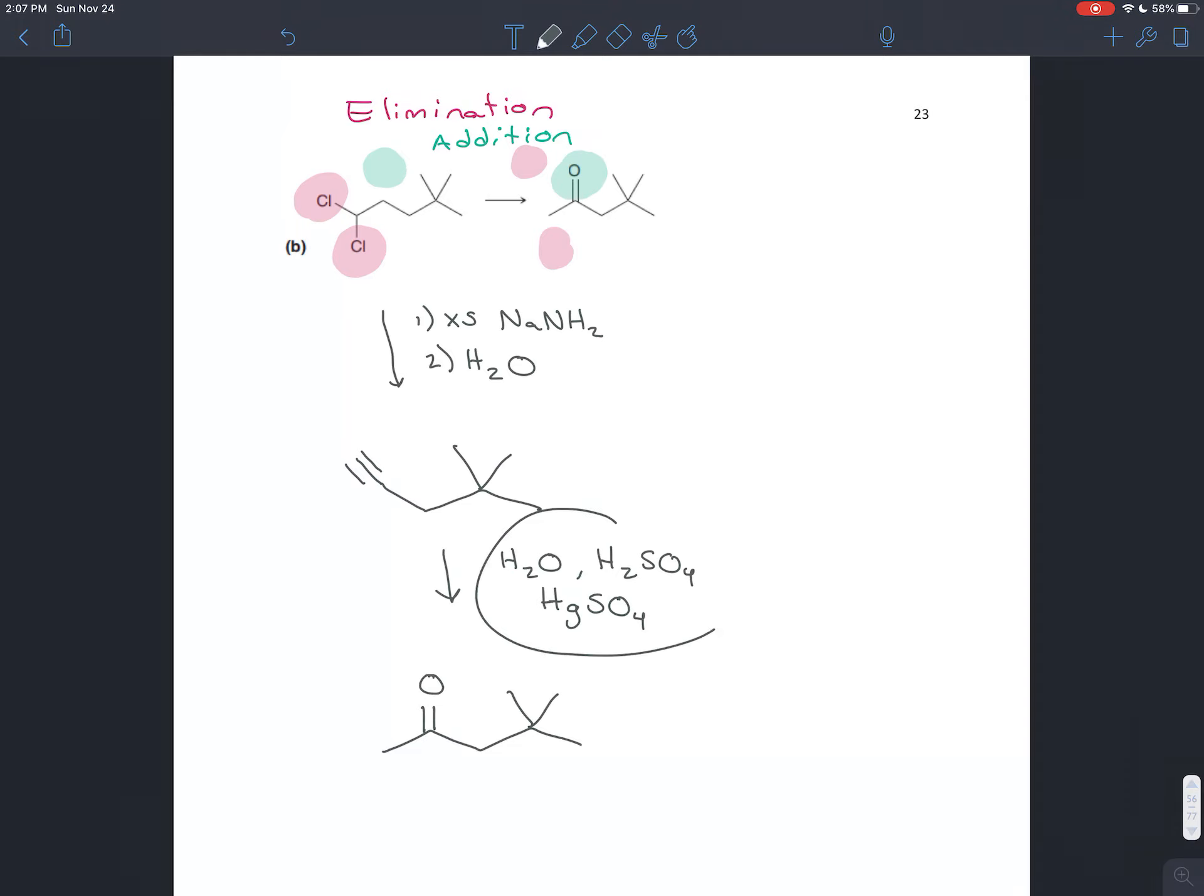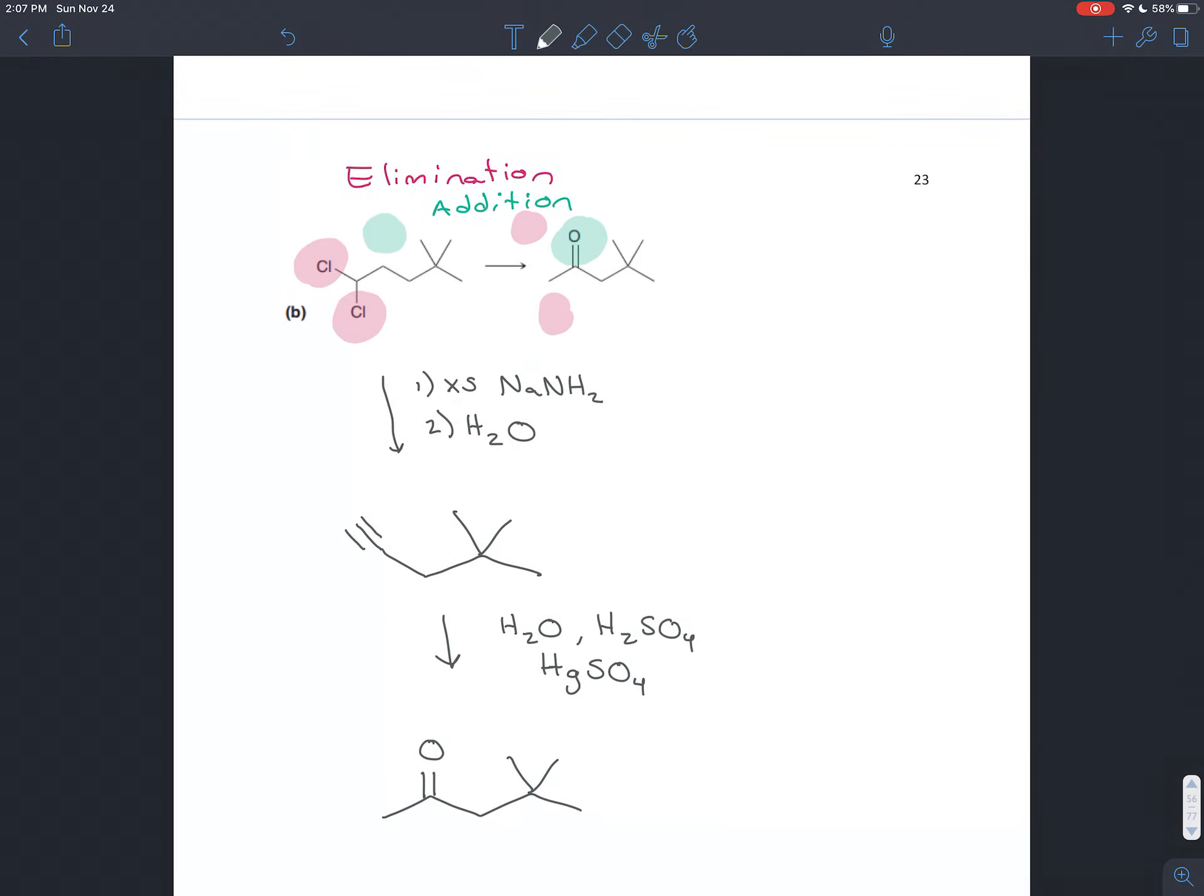This adds H and OH in a Markovnikov way, then undergoes keto-enol tautomerization to give the ketone. The overall recipe is three steps: excess sodium amide to do two successive eliminations and create two pi bonds, then water to stabilize the carbon at the end. Then acid-catalyzed hydration—Markovnikov addition of H and OH—which tautomerizes to give the ketone.